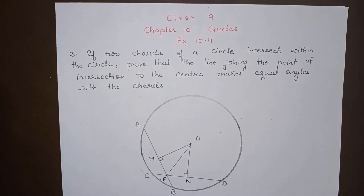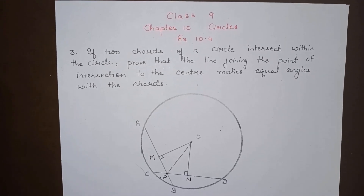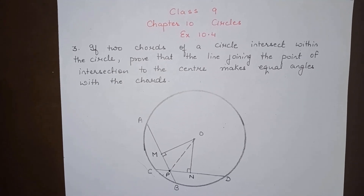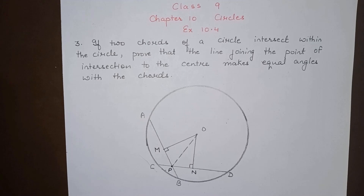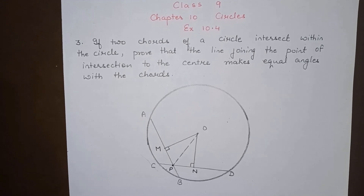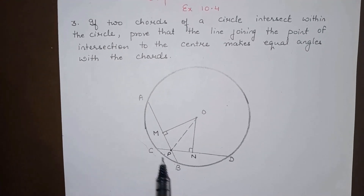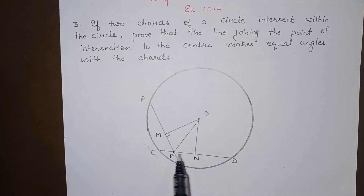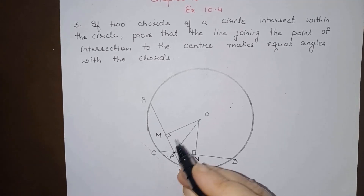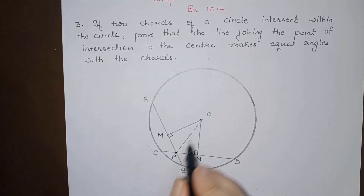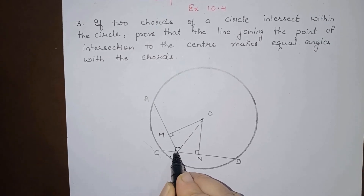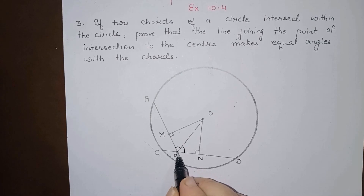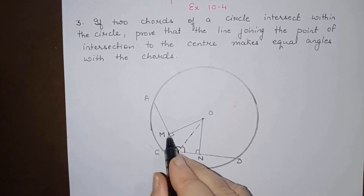Today we will do Class 9, Chapter 10, Circles, Exercise 10.4, question number 3: if two equal chords of a circle intersect within the circle, prove that the line joining the point of intersection to the center makes equal angles with the chords. AB and CD are two equal chords that intersect each other at P. OP makes an angle with chord AB and an angle with chord CD, and we have to prove these angles are equal.